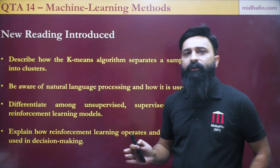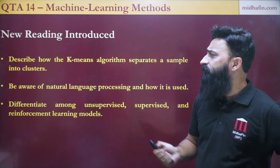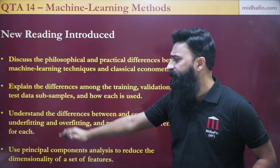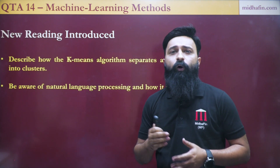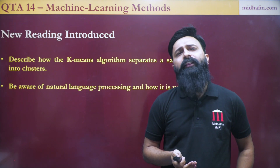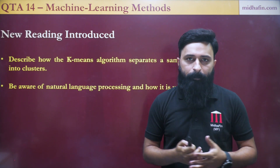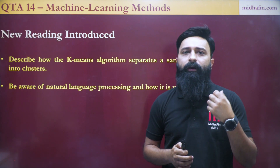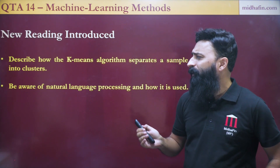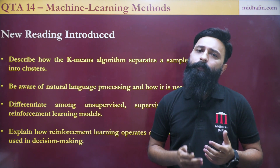Those were the learning objectives of QTA 14, the new chapter introduced. If you read the first words of these learning objectives — discuss, explain, understand, use, be aware of — they point towards a more theoretical construct. So more or less, you will be tested on the conceptual and theoretical parts of machine learning methods in the exam. There are a few calculative parts as well, like standardization, Euclidean and Manhattan distances, and the point where the centroid lies, but they are also going to be quite basic. Overall, it is a more theoretical chapter where the concepts of machine learning methods are introduced.